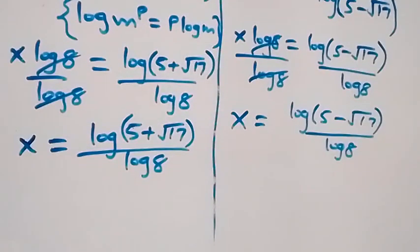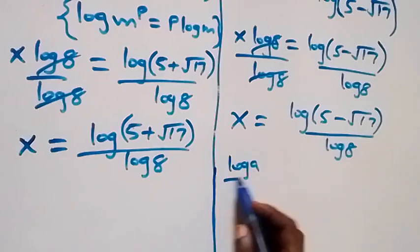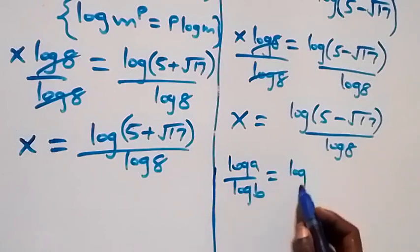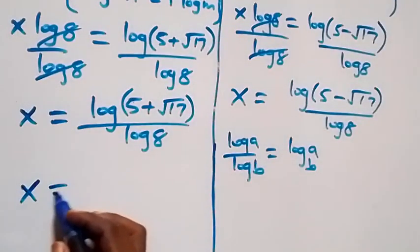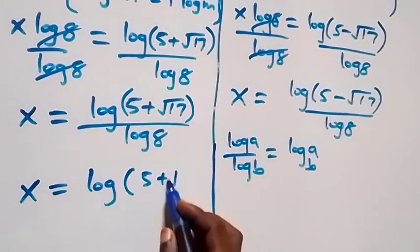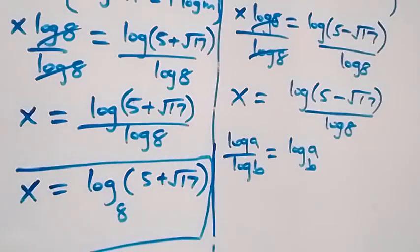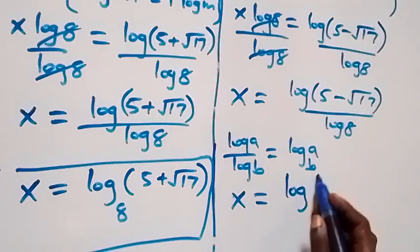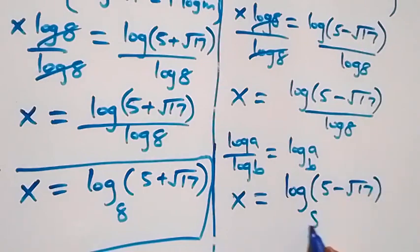We can also express this another way. From the change of base rule, log A over log B is the same as log A to base B. So from here, x equals to log (5 plus root 17) to base 8. And on the other side, x equals to log (5 minus root 17) to base 8.